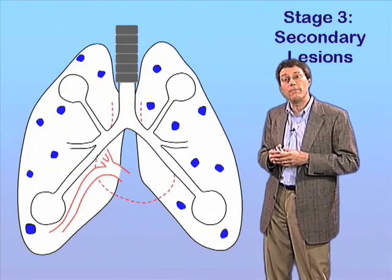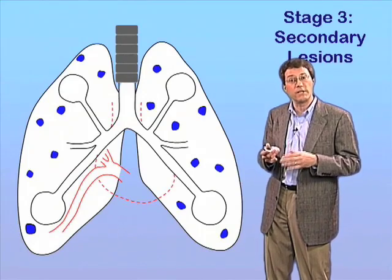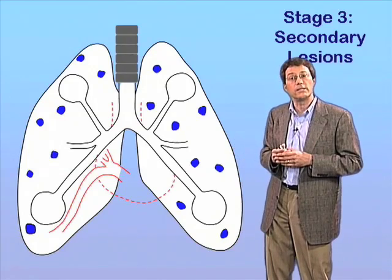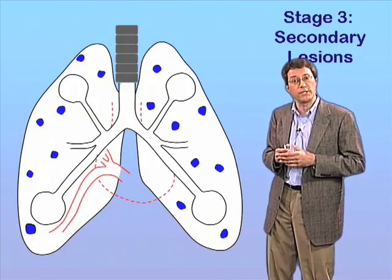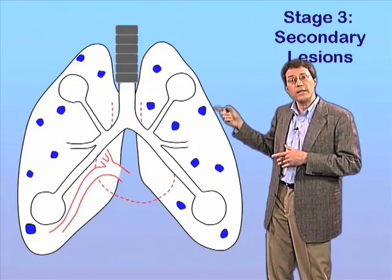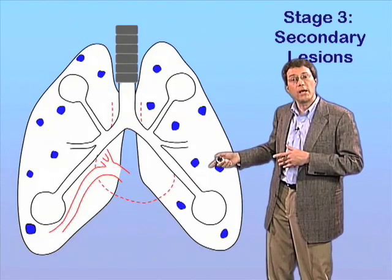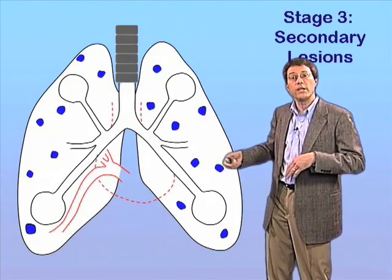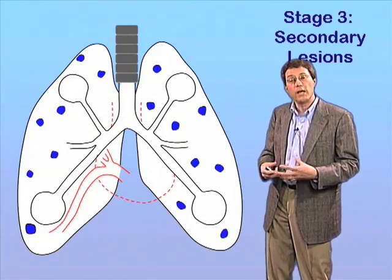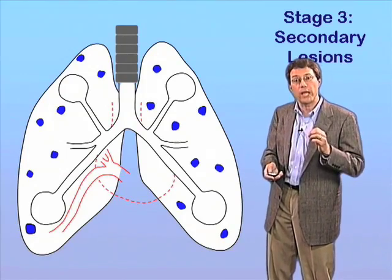TB, being a protean bacterium, can adapt to almost any environment and can cause disease of the spleen, the liver, the bone, the eye — any organ system can be susceptible to tuberculosis. But the lung is, for sure, the most important organ affected. By seeding through the hematogenous route, all parts of the lung become infected with the tubercle bacillus, which goes through this process of infection of macrophages and formation of secondary lesions seeded by the bloodstream rather than the airway.